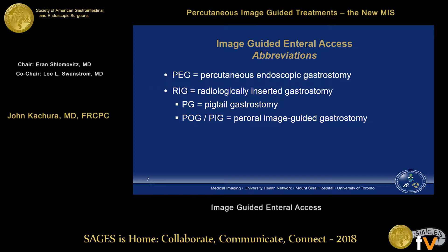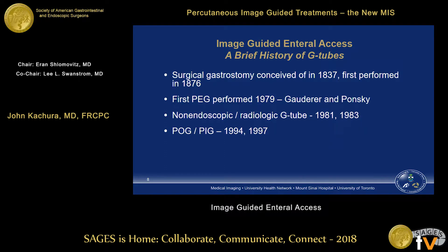Some abbreviations: PEG of course — percutaneous endoscopic gastrostomy. RIG is a term sometimes used in the literature for radiologically inserted gastrostomy, which could either be a pigtail or cope loop gastrostomy. POG — per oral image-guided gastrostomy — some people call it a PIG, but we don't like to call people pigs. The POG is essentially the same device as a PEG, but placed in a different way without endoscopy, just with image guidance.